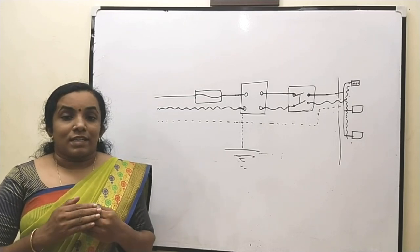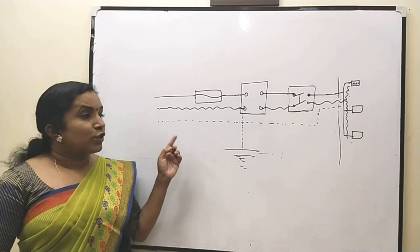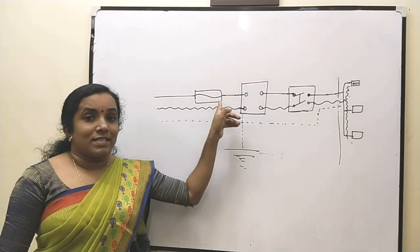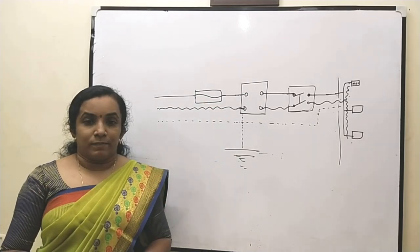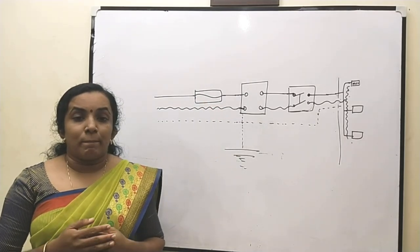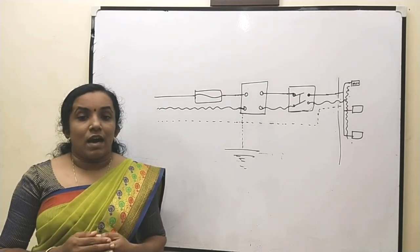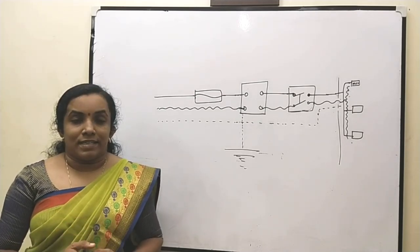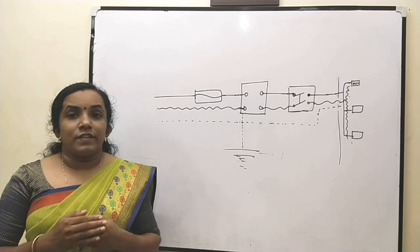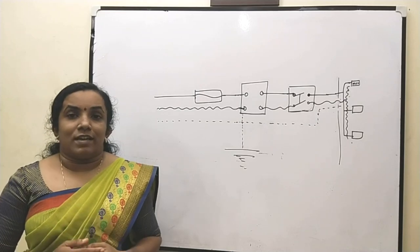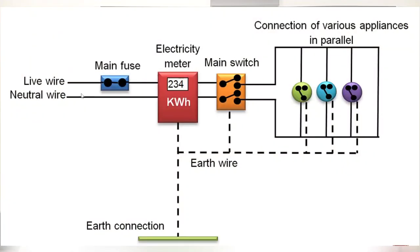Before connecting the cable from the pole to the meter in the house, a high-rated fuse is connected to the live wire. This fuse is called the company fuse, and only personnel of the electric supply company are authorized to handle it. The rating of this fuse depends on the type of connection; usually in houses, a fuse of 50 amperes is used.